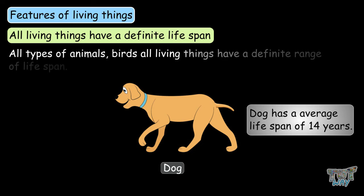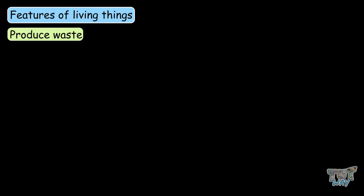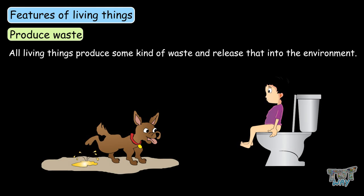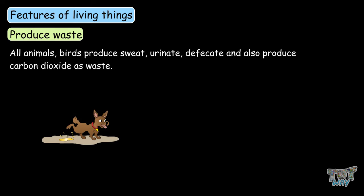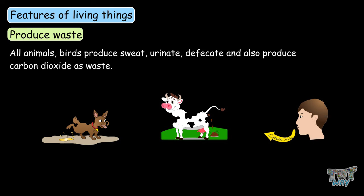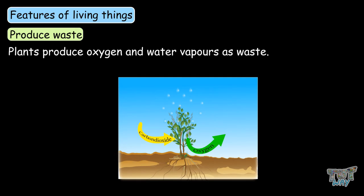So, all types of animals, birds, and all other living things have a definite range of lifespan. The next characteristic is that they produce waste — all living things produce some kind of waste and release that into the environment. All animals and birds produce sweat, urinate, defecate, and produce carbon dioxide as waste. Plants produce oxygen and water vapors as waste.